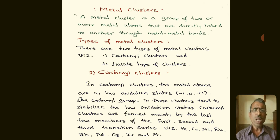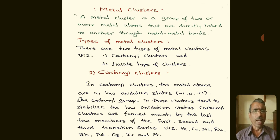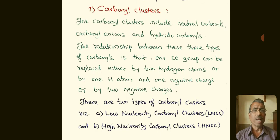The carbonyl group in these clusters tends to stabilize the low oxidation states. Carbonyl clusters are formed mainly by the last few members of the first, second, and third transition series — namely, iron, cobalt, nickel, ruthenium, rhodium and palladium, osmium, iridium and platinum.